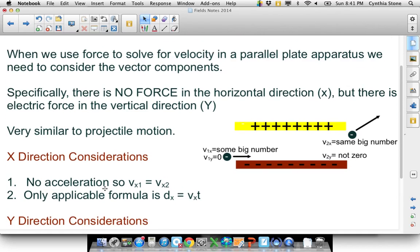So in the X direction, there is no acceleration, so the initial X velocity is equal to the final. You can use the formula that the distance, in this case the distance between the plates, whatever the length of the plates are, is equal to Vx times the time it's in the plates.